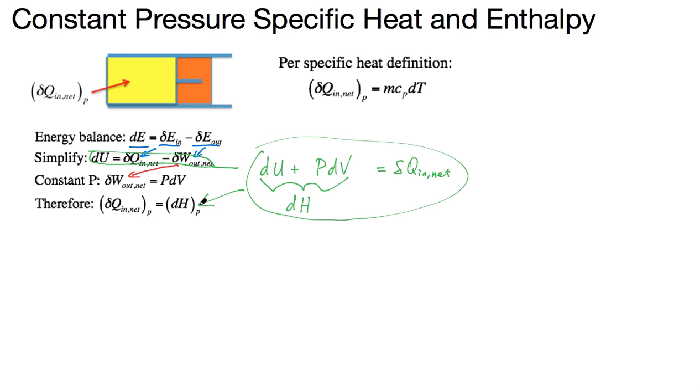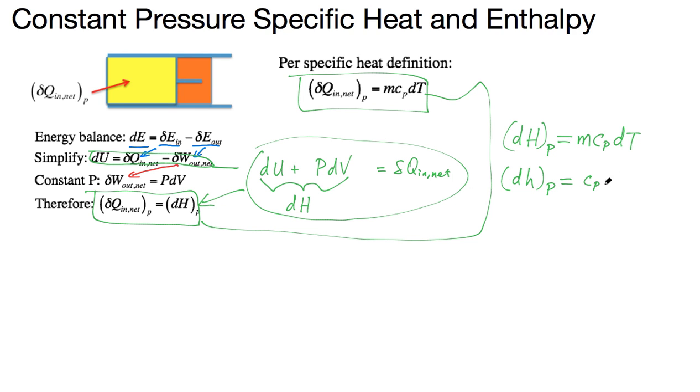Because of these two equations, the energy balance and the definition of specific heat for constant pressure, we get this relation: dH at constant pressure equals the mass of the system times C_p times dT. Further dividing both sides by the mass, we have dh lowercase constant pressure equals C_p dT.